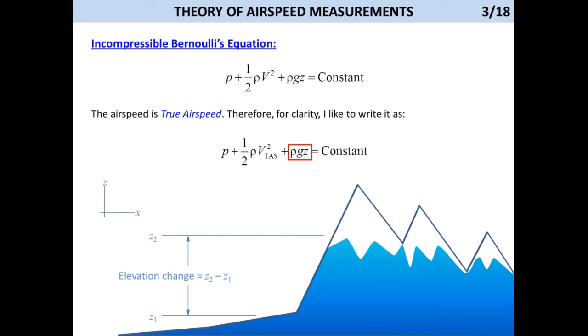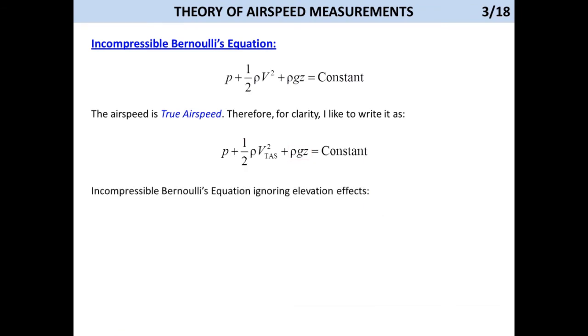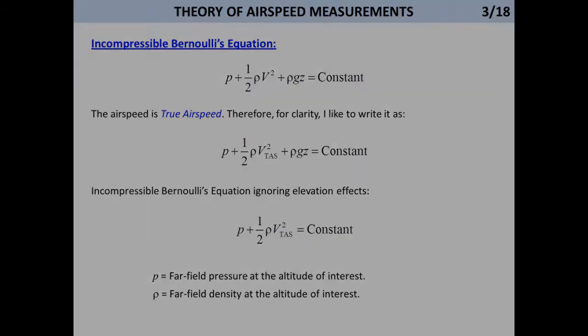Note that the term rho times g times z is used to account for elevation changes. We don't have to deal with these in airspeed theory for the simple reason that elevation changes are so minute that they can be ignored. Therefore, let's rewrite the equation in a more concise form.